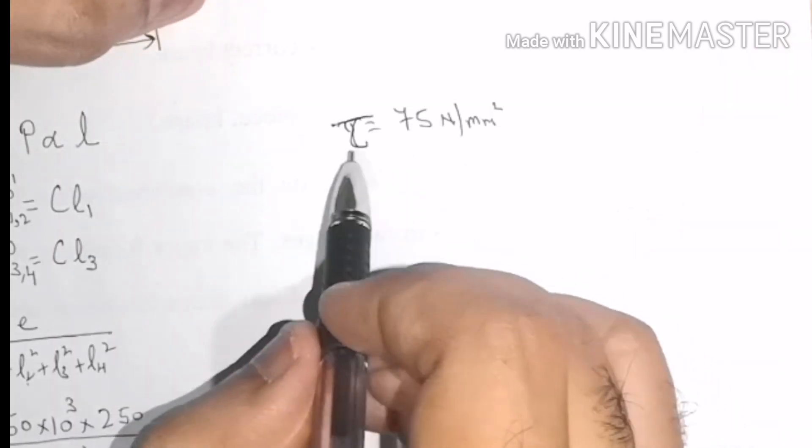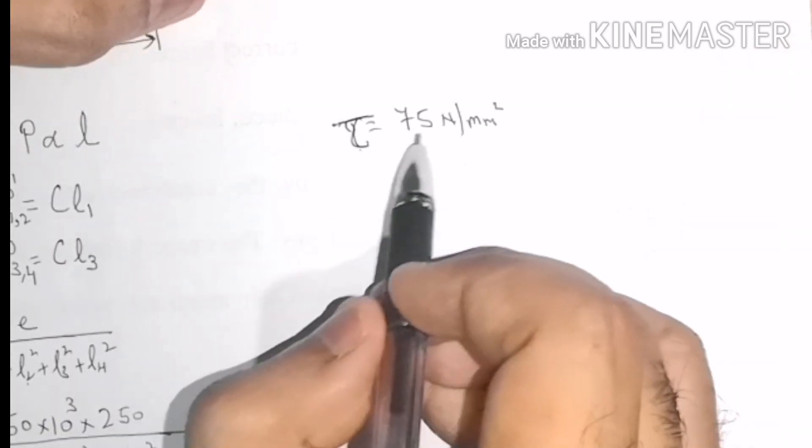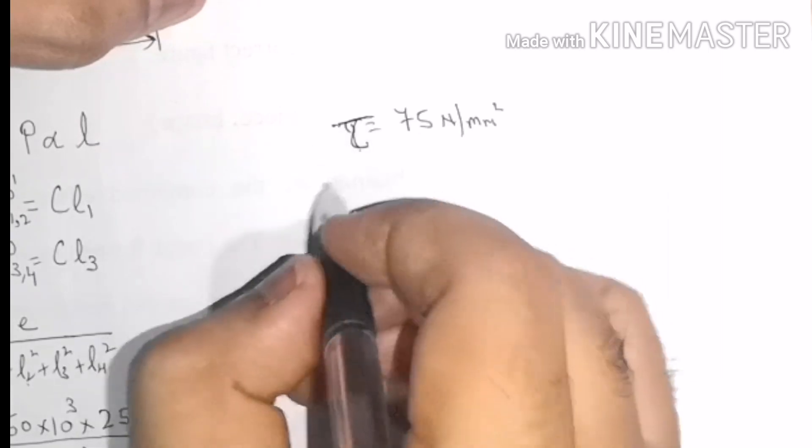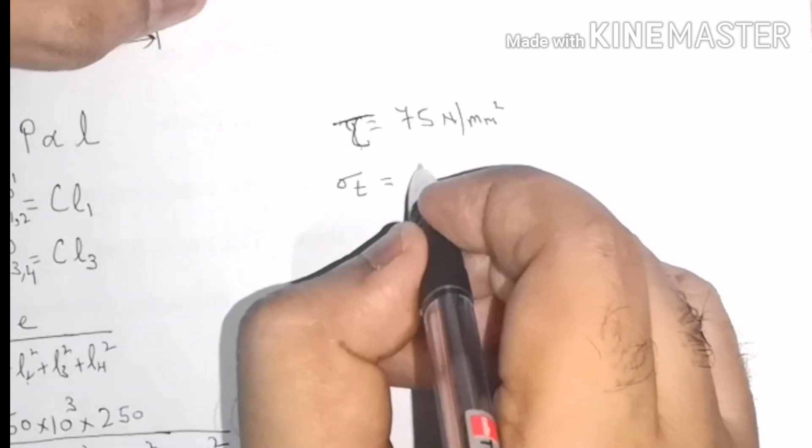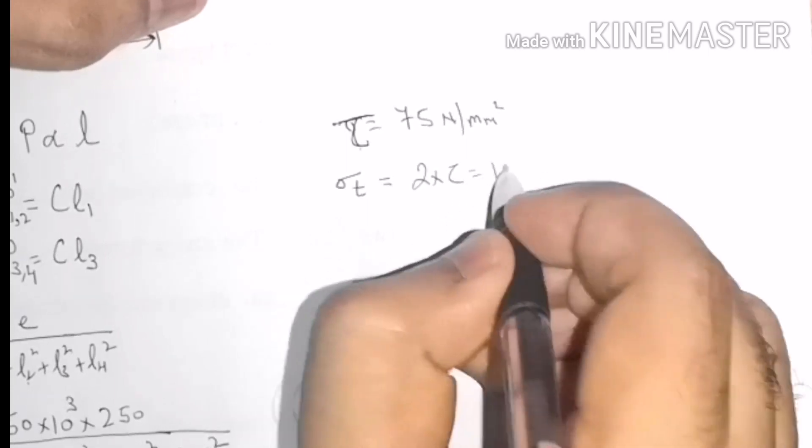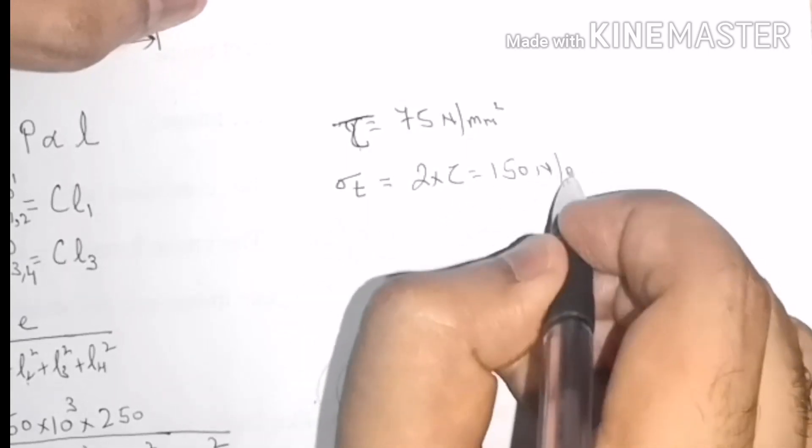In the question, the permissible shear stress is given as 75 N/mm². From here, I can find the permissible tensile stress as σt = 2τ = 150 N/mm².